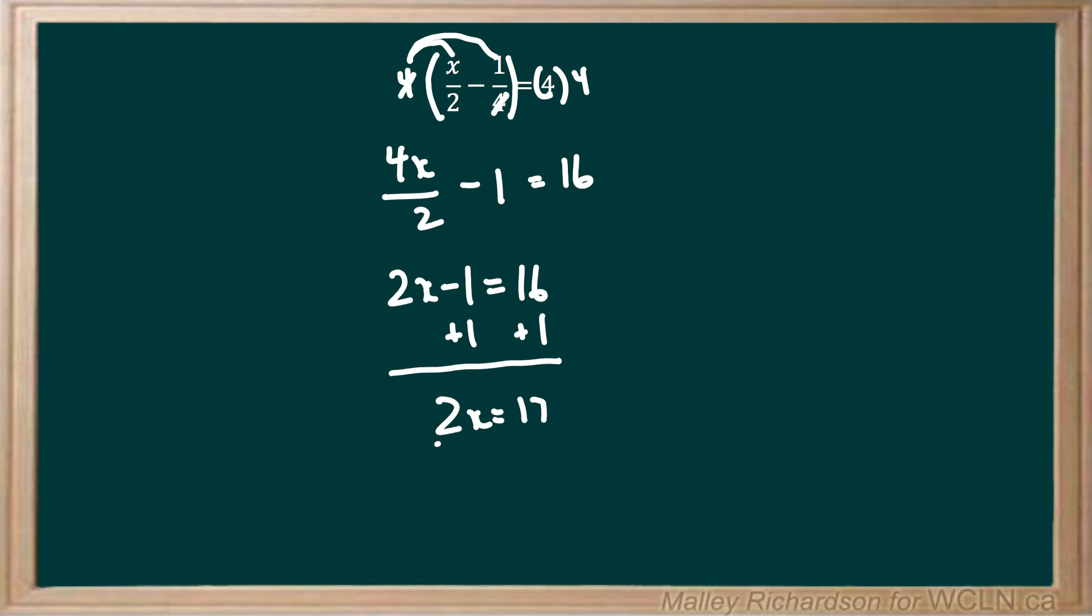And then to get x by itself, we want to divide both sides by 2. And we get x equals 17 over 2 as our final answer.